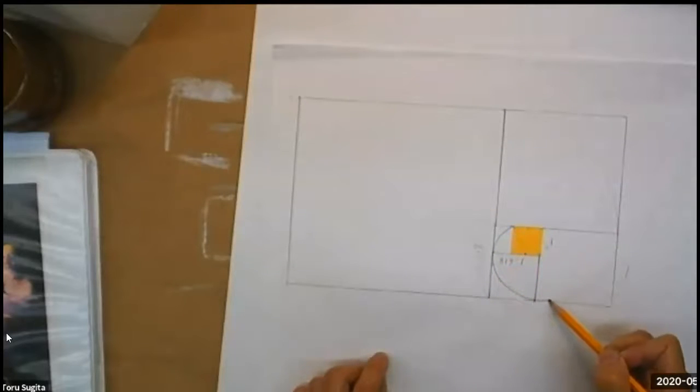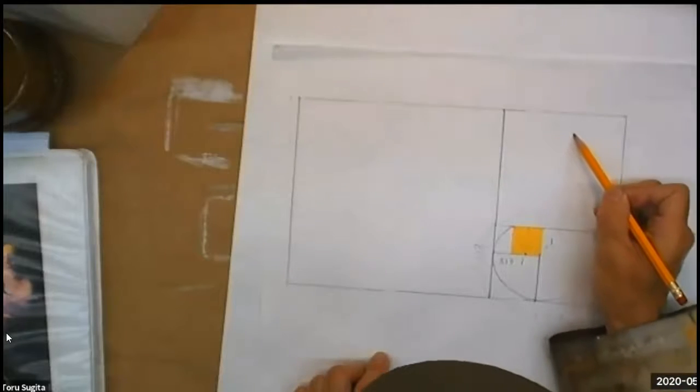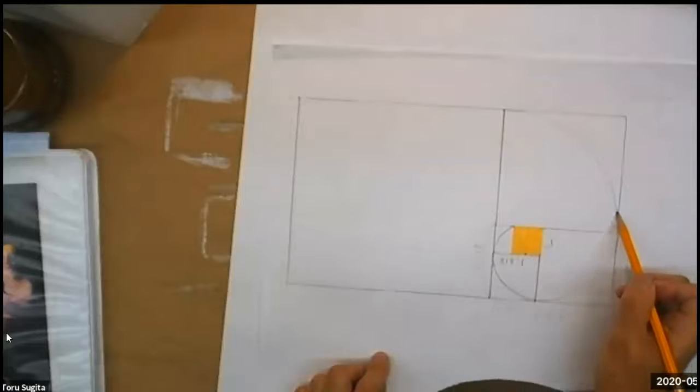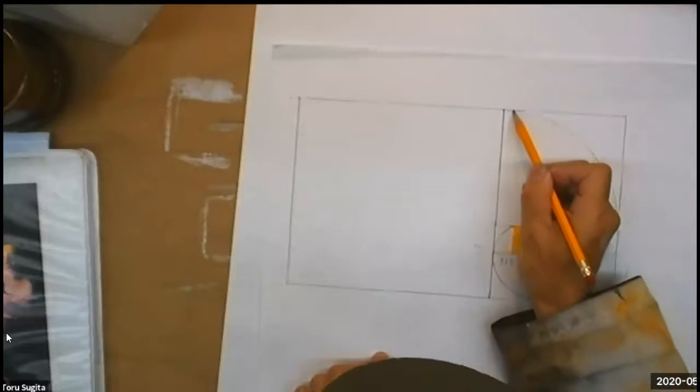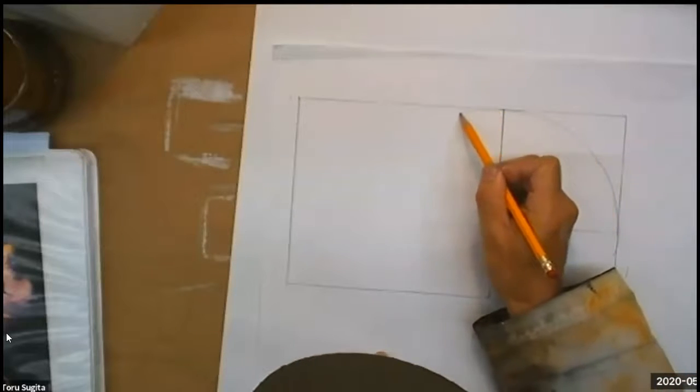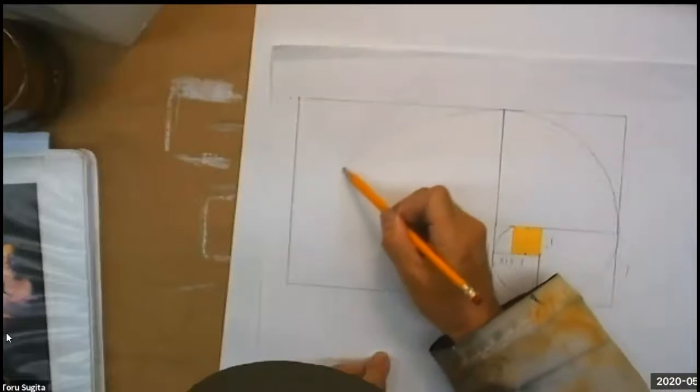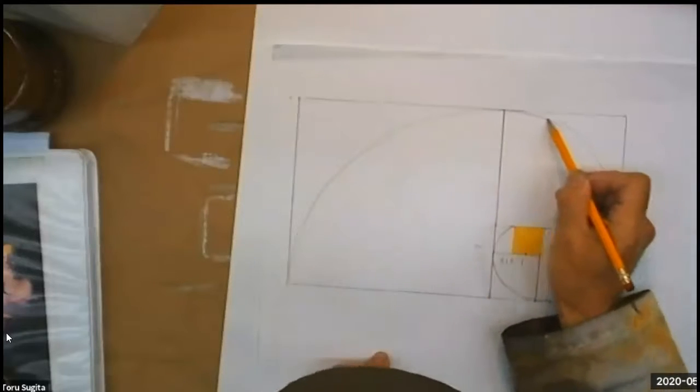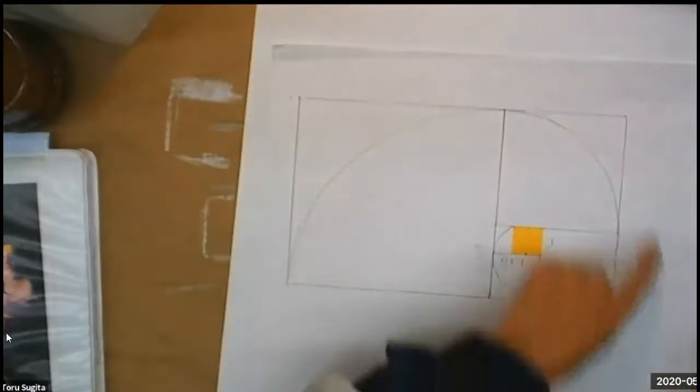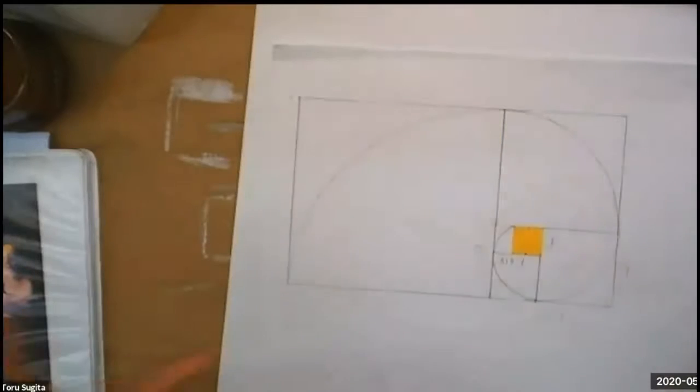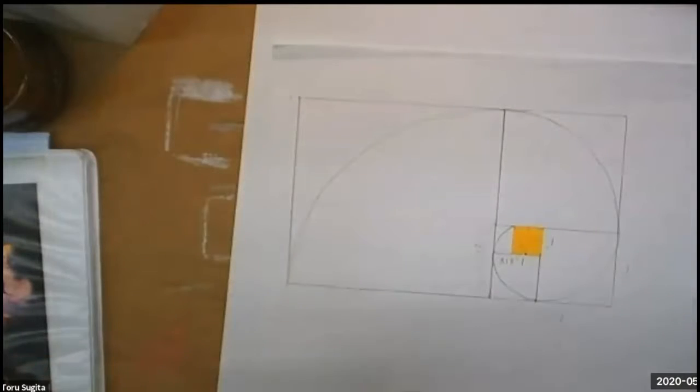That curvature applies to many things like how flowers bloom, how galaxies are formulating. Everything follows this curvature. So this one really tells us a golden rectangle is applying to everywhere in the universe from a microscopic level to a very big scale as universe.